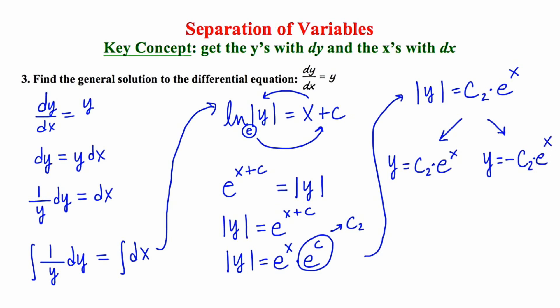Now the thing is, this constant c sub two, it could have been positive or it could have been negative. So it's really not necessary to write two separate equations because the c could have been positive or it could have been negative. So since these two equations aren't necessary, we could go back and say that this absolute value in fact wasn't necessary.